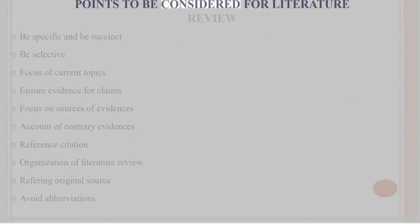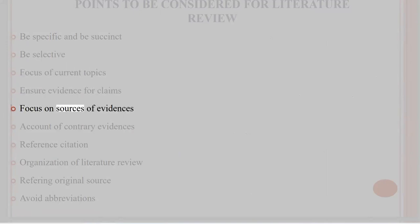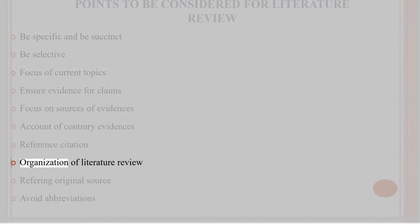Points to be considered for literature review: be specific, be succinct, be selective, focus on current topics, ensure evidence for claims, focus on sources of evidence, account for contrary evidence, proper referencing and citation, organization of literature, review by referring to original sources, and avoid abbreviations.